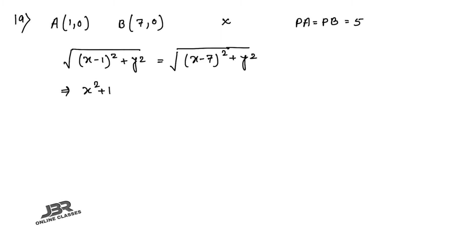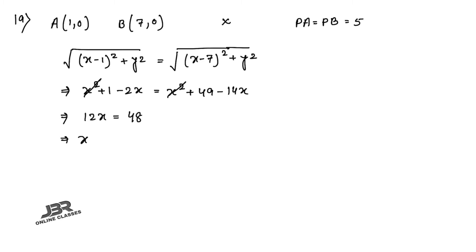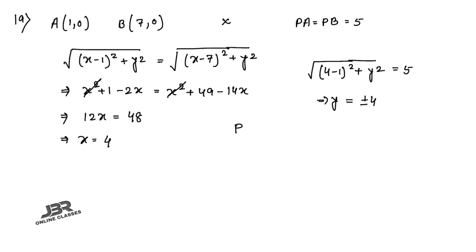Squaring both sides: x² + 1 − 2x = x² + 49 − 14x. The x² and y² terms cancel, giving 12x = 48, so x = 4. Substituting x = 4 into PA = 5: (4−1)² + y² = 25, so y² = 16, giving y = ±4. Since P is in the first quadrant, y = 4. So P = (4, 4).